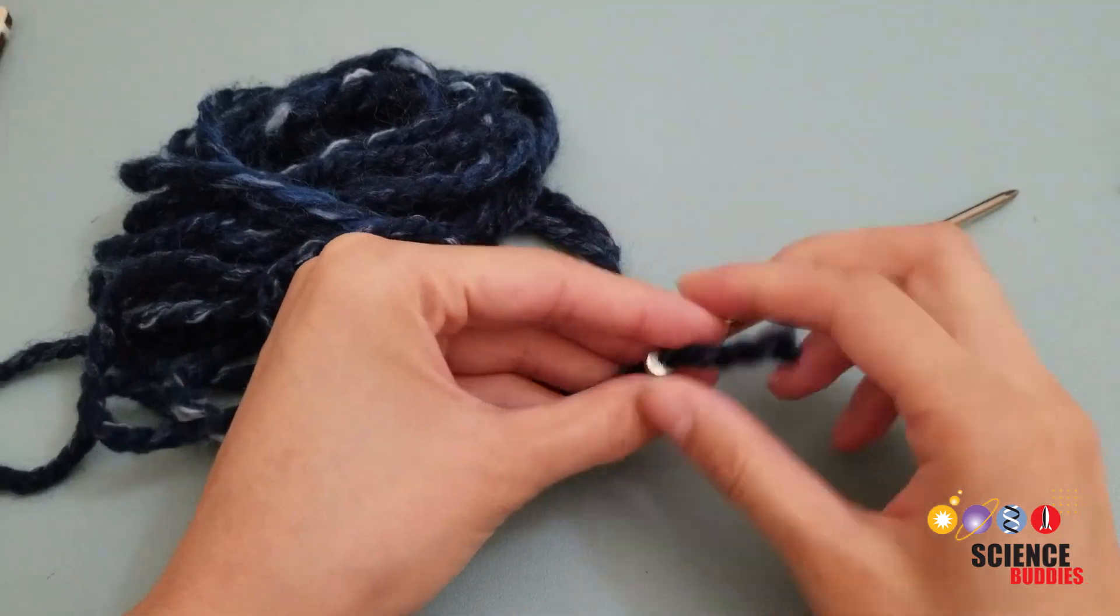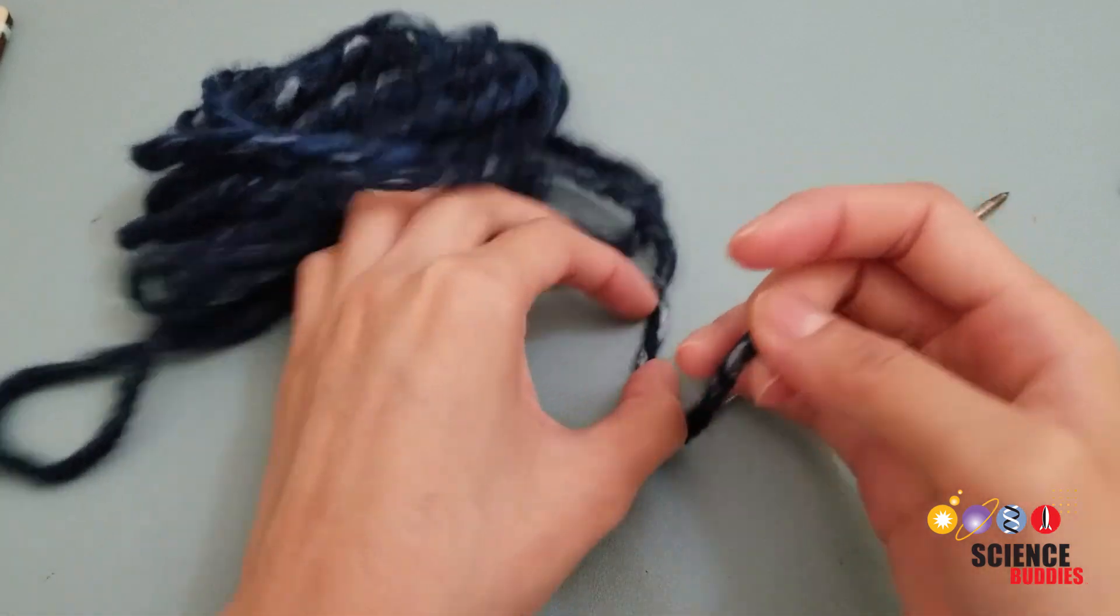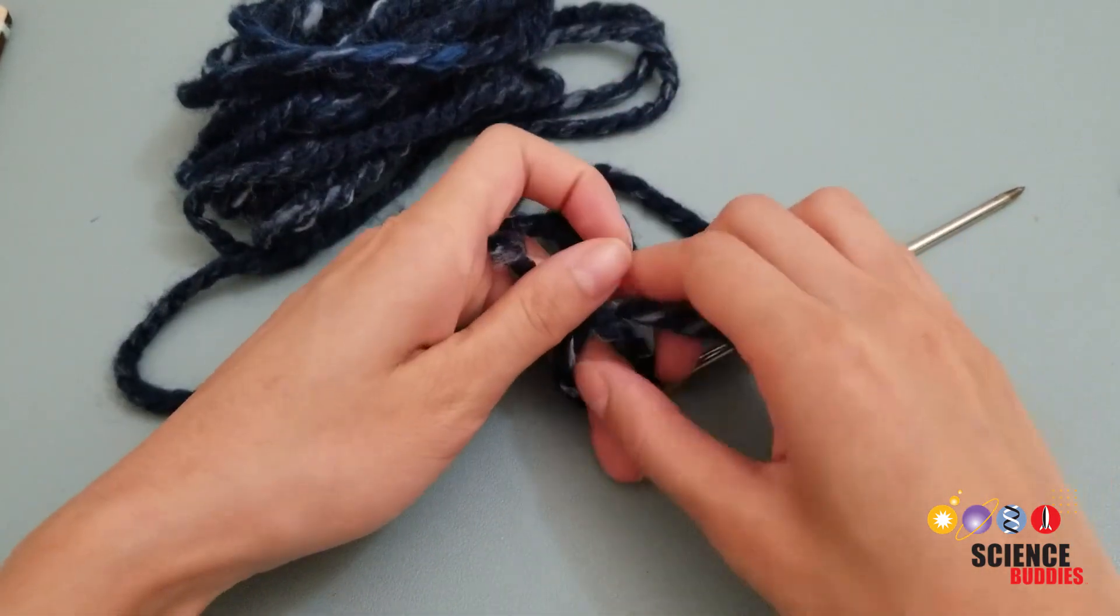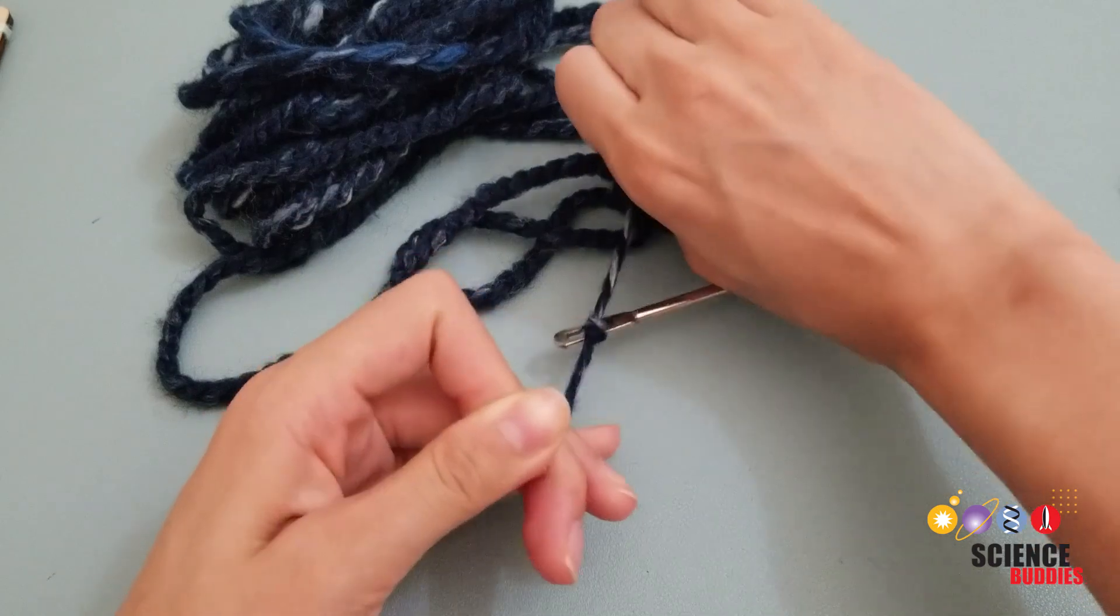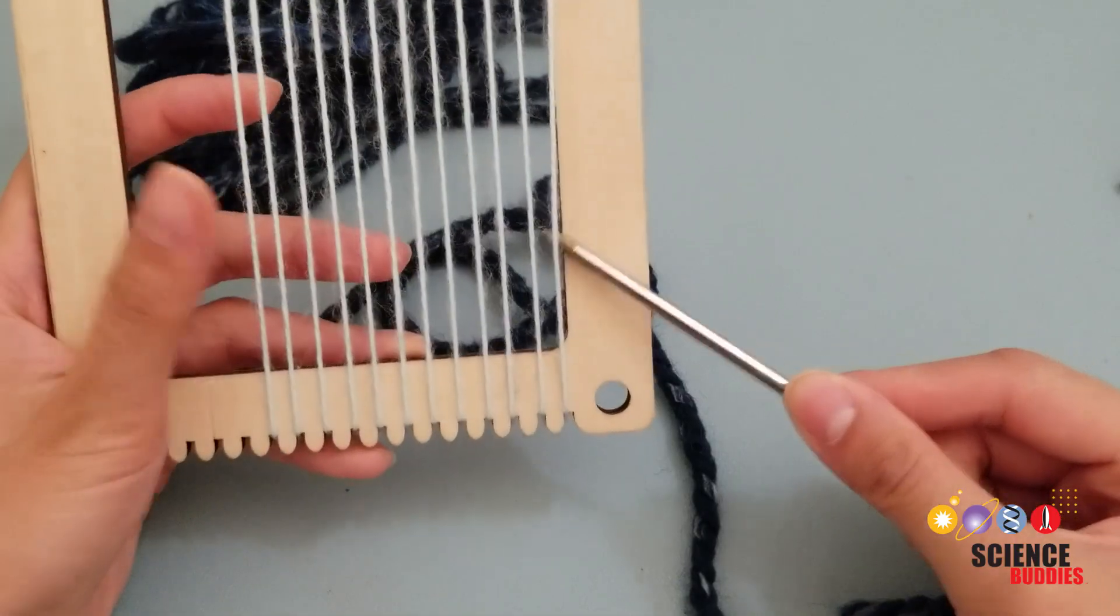To start, cut about 6 feet of thick, non-conductive yarn. This is your weft yarn. The thicker your yarn is, the faster your weaving will be. Thread your weft yarn through the hole in the tapestry needle and weave.